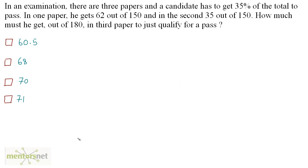In an examination, there are three papers and a candidate has to get 35% of the total to pass. In one paper, he gets 62 out of 150 and in the second, 35 out of 150. How much must he get out of 180 in the third paper to just qualify for a pass?